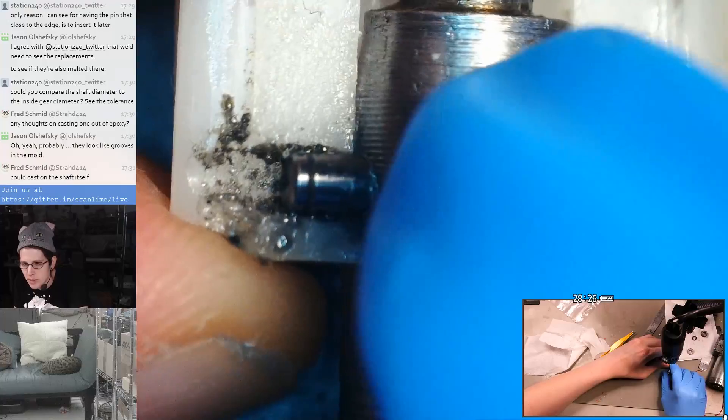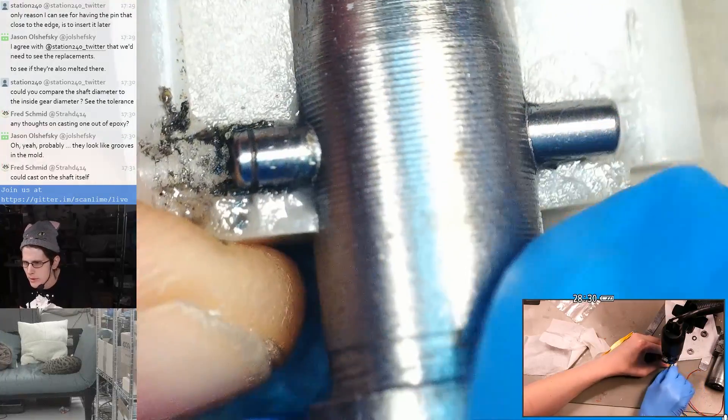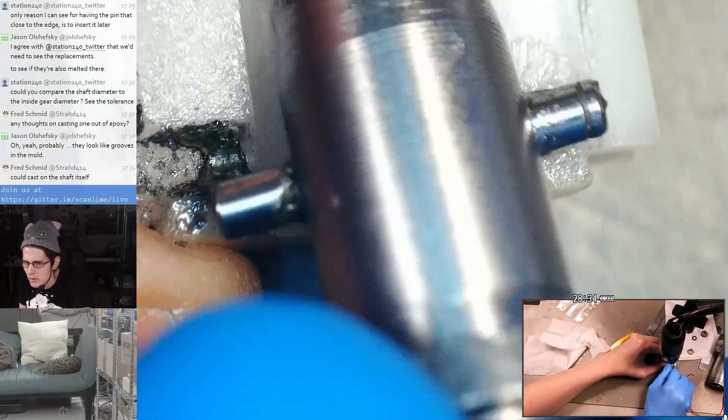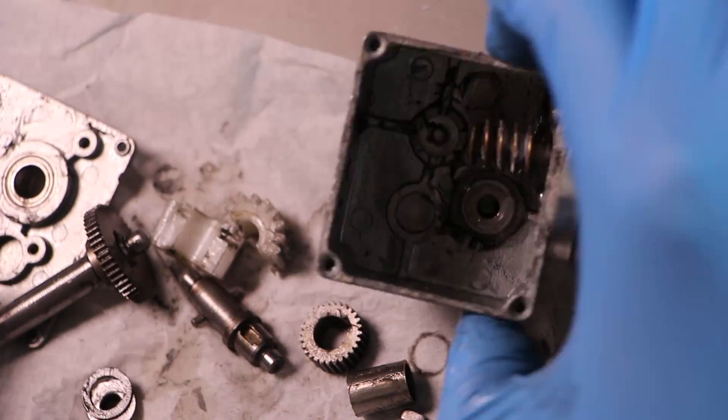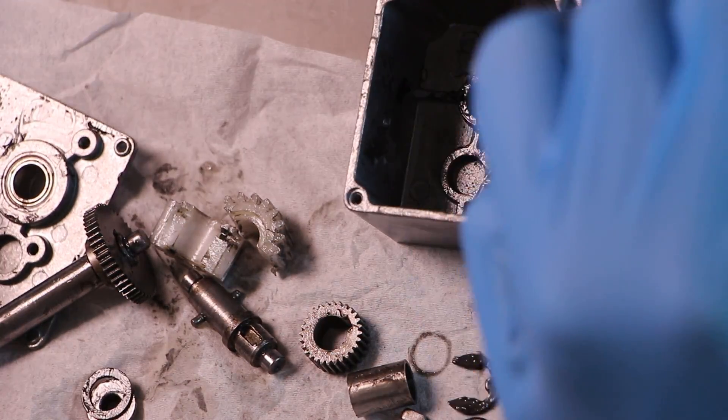And then there's a plastic gear, I assume nylon, which is attached using a pin, which appears to have some heat damage along one side. This intermediate shaft is supported with a bushing at each end.